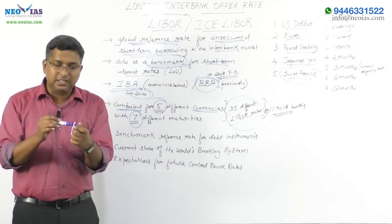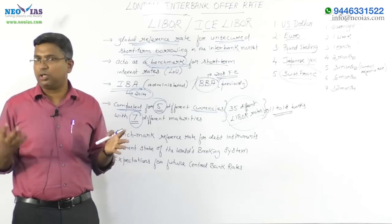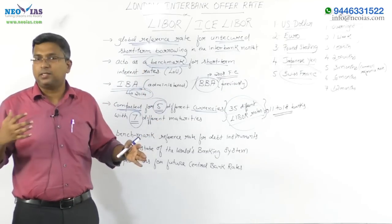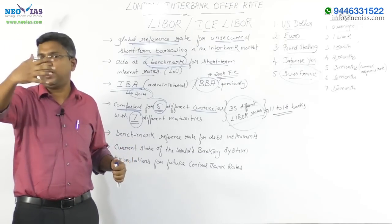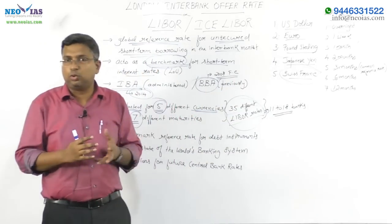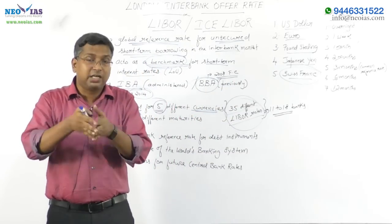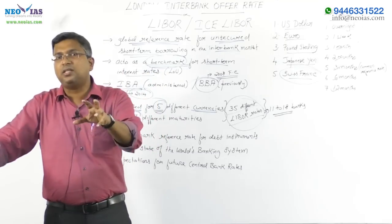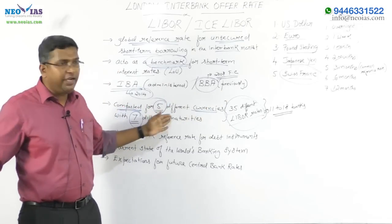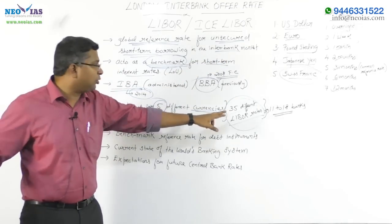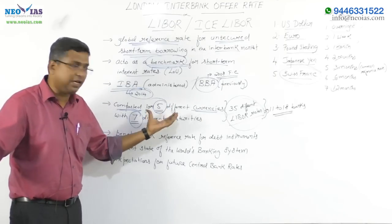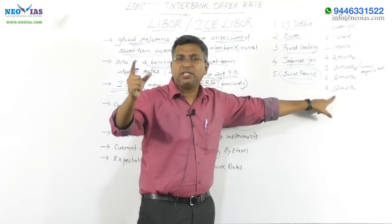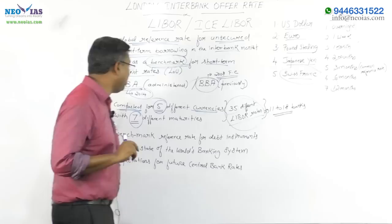These 35 rates are determined based on contributions from 11 to 18 globally prominent banks, who suggest the prevailing interest rate. Based on an arithmetic mean of those submissions, the 35 rates for the 5 different currencies are determined. Since LIBOR is a short-term interest rate, the maximum maturity is 12 months. The 5 currencies are very important to remember.